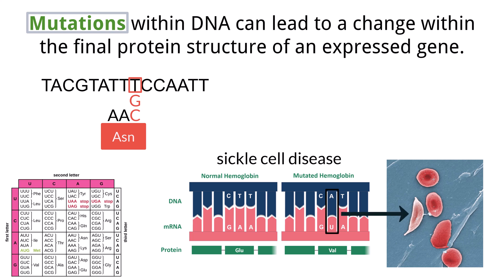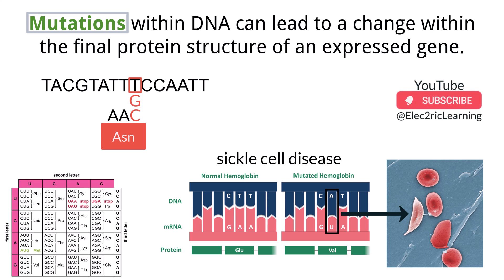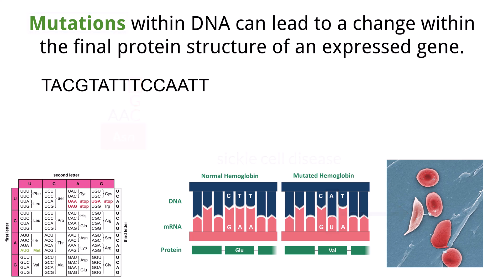These sickle cells can get caught in capillaries, which can block blood flow. But while this is an example of a single point mutation being negative, that is not always the case. Sometimes if the DNA gets mutated, nothing will happen because a new codon could code for the same amino acid as before, which is all due to the degeneracy of the genetic code.